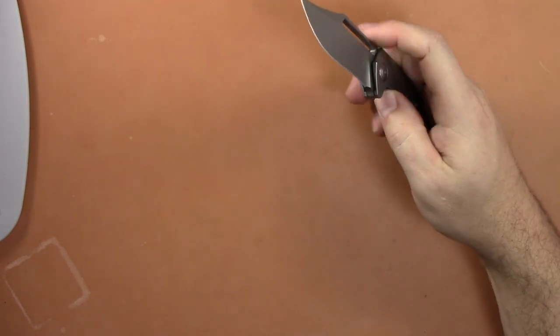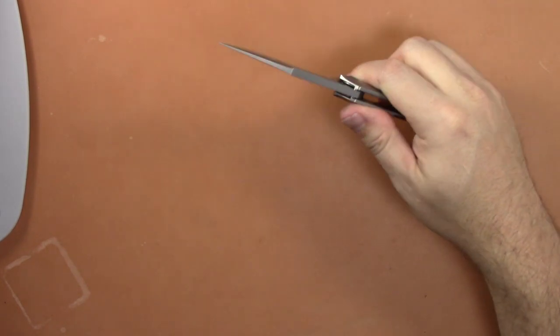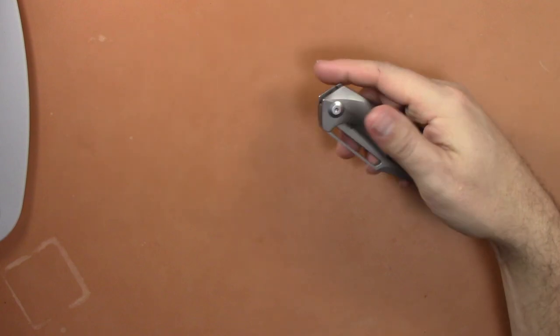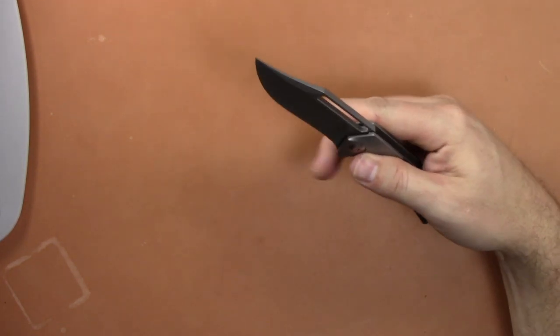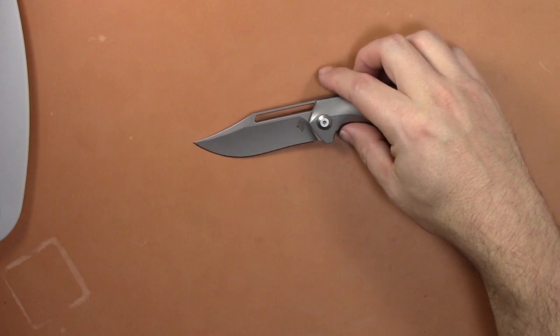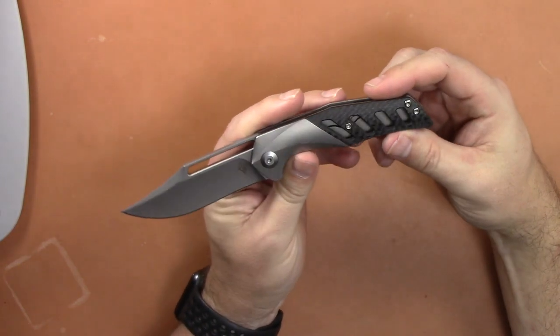So you had the options of black PVD, stonewashed blade, stonewashed blade, handle clip, and backspacer, or bead blasted blade with stonewashed handle, clip, and backspacer. I don't love bead blasted blades, so I went with the stonewashed.